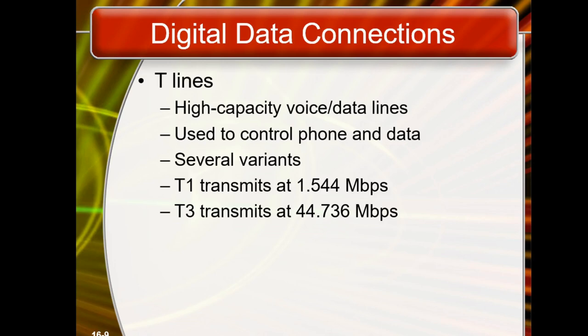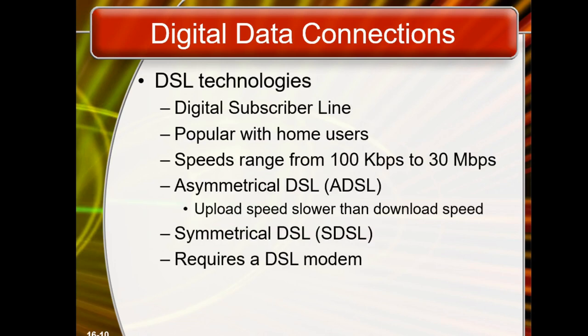T-carrier lines are high-speed dedicated digital lines. They can be leased from telephone companies. For example, T1 lines have a transmission speed of 1.544 Mbps. They provide a point-to-point dedicated digital communication path. Dedicated means that line is only for you — no one else's data is shared on it. So on a dedicated line, only your data is transferred.